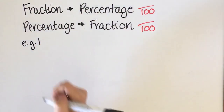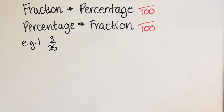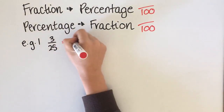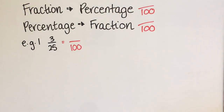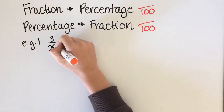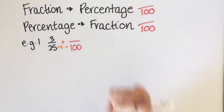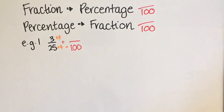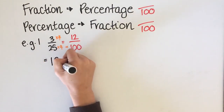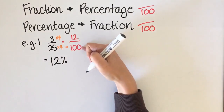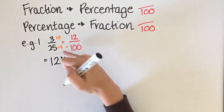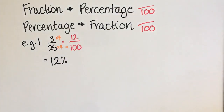Our first example is 3 over 25. I want to convert it to a percentage, so I need to put this fraction over 100. To get it over 100 I have to multiply the top and the bottom by the same number. I know 25 times 4 gives 100, so I need to times the top number by 4 as well. 3 times 4 is 12, so I get 12 over 100. 12 out of 100 is the same as 12%.